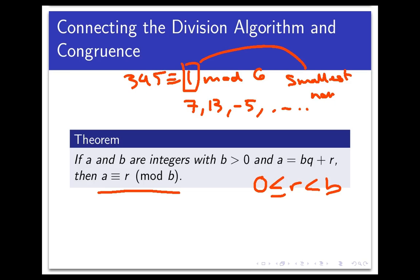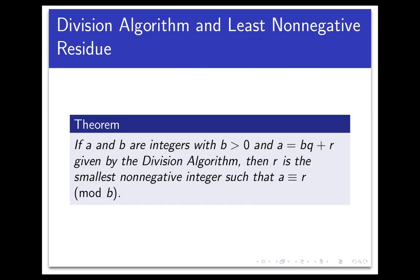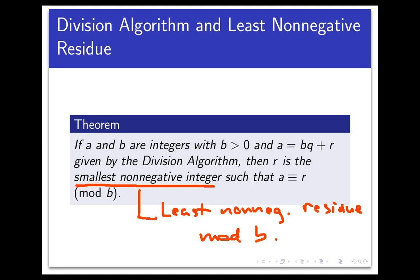So what we actually get from the division algorithm is the following. If a and b are integers with b positive and a equal to bq plus r given by the division algorithm, that is that r is greater than or equal to 0 but less than b, then r is the smallest non-negative integer such that a is congruent to r modulo b. In an earlier video, we gave this value a name. We called it the least non-negative residue mod b. That least non-negative residue is the remainder that we get from the division algorithm.